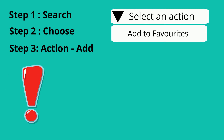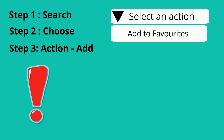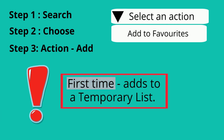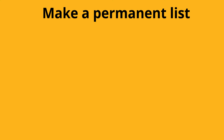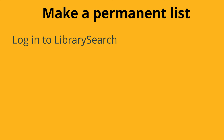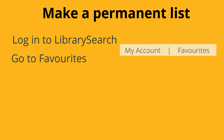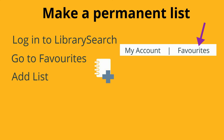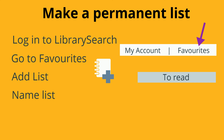An important note: the first time that you save a favourite, it will add it to a temporary list. You'll need to set up one or more permanent lists if you want to keep hold of your favourites. To do this, make sure you're logged into LibrarySearch, then click Favorites in the menu at the top. Click the Add List icon, which looks like a notepad with a plus sign on it. Give your list a name, and then move any items from the temporary list to your new list.